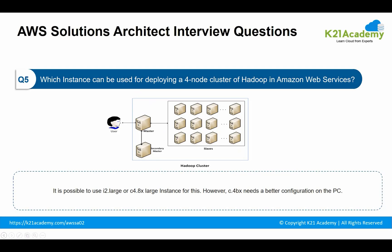Moving to the next question: which instances can be used for deploying a 4-node cluster of Hadoop in Amazon Web Services? It is possible to use i2.xlarge and c4.8xlarge instances for this. However, c4.8xlarge needs a better configuration on the PC. At the same time, you can simply launch EMR, which is Elastic MapReduce, for automatic configuration of the servers. Data can be put into S3 and EMR is able to pick it from there, then load your data back into S3 after processing.